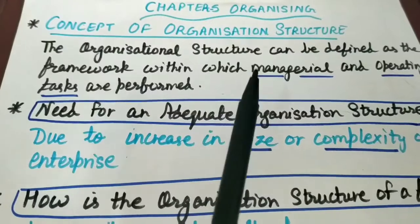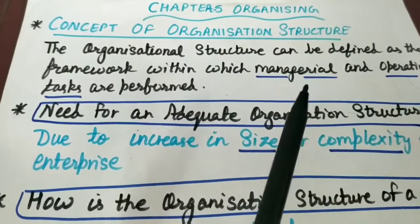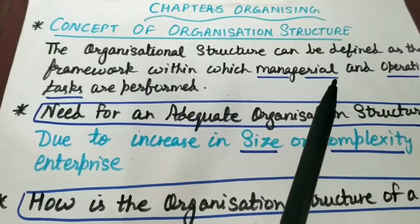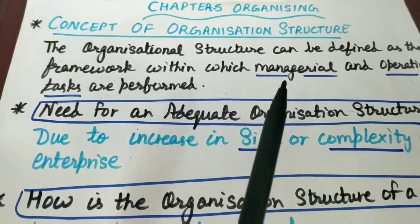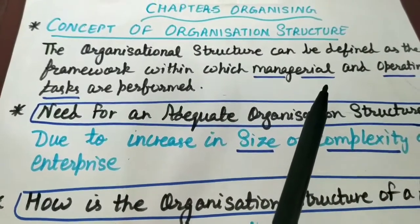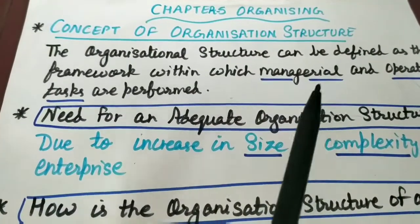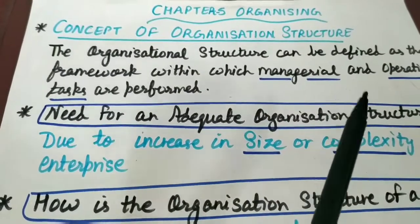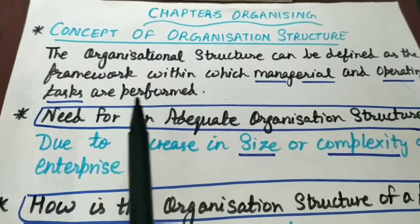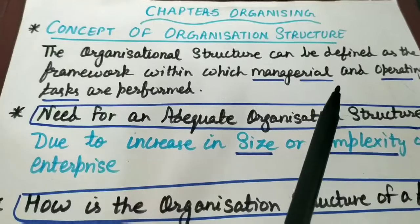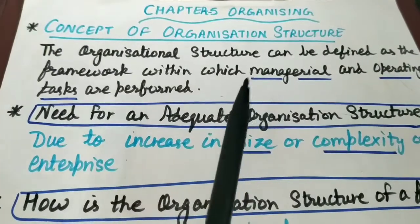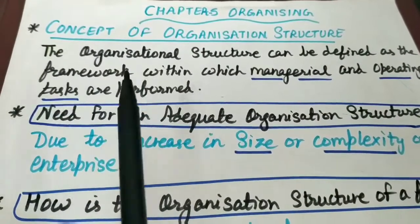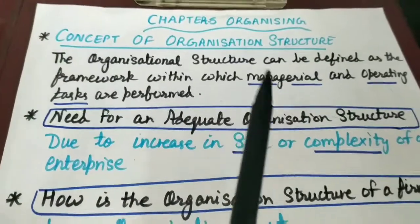Jo bhi humne employees ko task distribute kia hua hai, division of work kar rakhi hai in the form of jobs, and those jobs are being performed by different employees in the organization. And later on we have created authority-responsibility relationships — that is, who is to report to whom. Toh ye jo bhi hum activities perform kar rahe hain in the organization to achieve the pre-decided goal, we are performing within this framework of organizational structure.